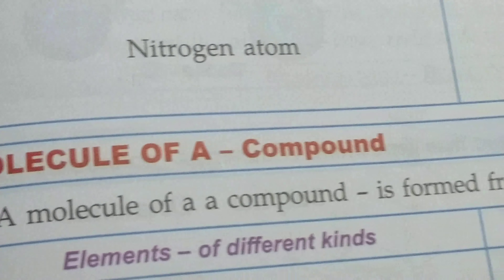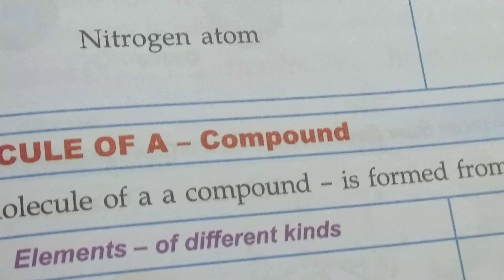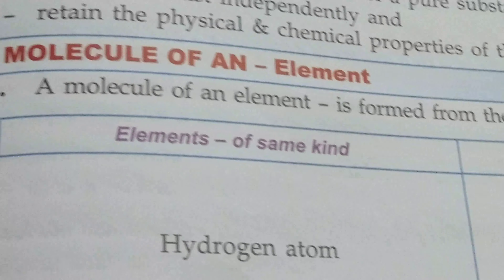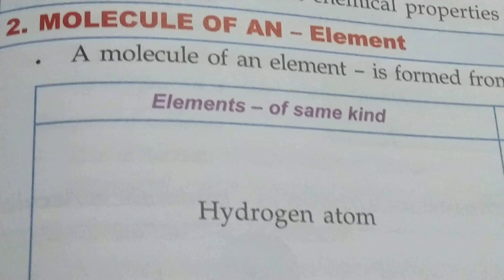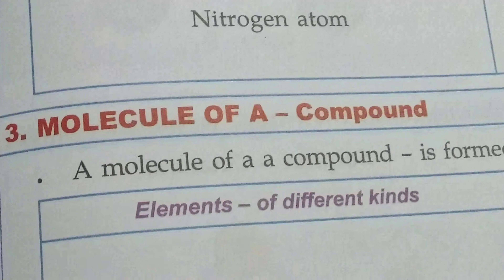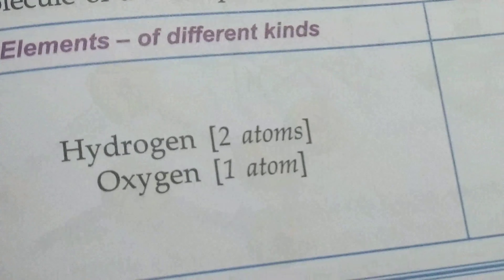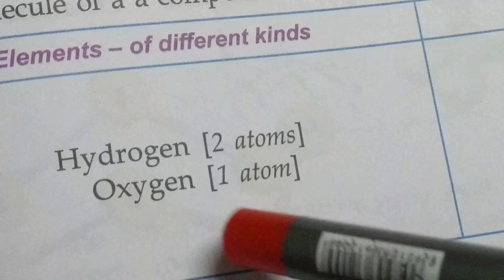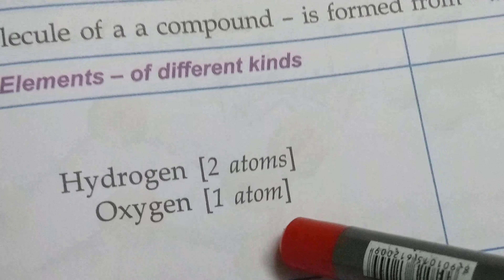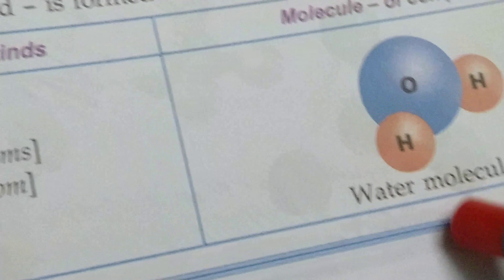So for a compound's molecule, different kinds of atoms combine, whereas for an element, the same kind of atoms combine together to form a molecule — that is the difference between element and compound. Like two hydrogen atoms combined with one oxygen atom to form one water molecule.